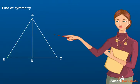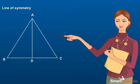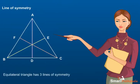Consider an equilateral triangle ABC. The line AD divides the triangle into two parts. Similarly, lines BE and CF also divide the triangle into two congruent parts. So, an equilateral triangle has three lines of symmetry.